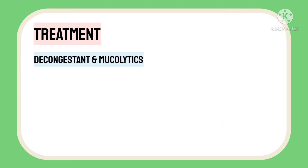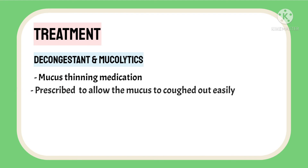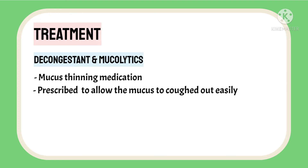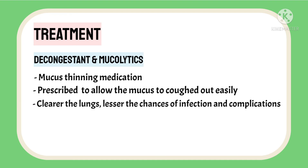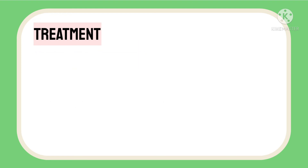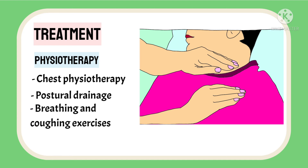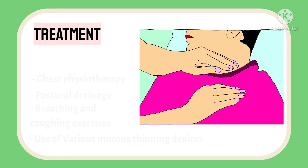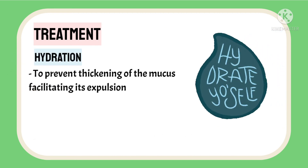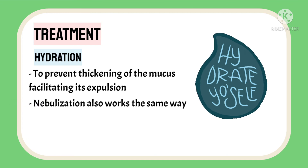A decongestant and a mucolytic — a mucus-thinning medication — are usually prescribed to allow mucus to be coughed out of the lungs easily and to clear the airways. The clearer the lungs are, the lesser the chances of infection. A physiotherapist may provide chest physiotherapy, postural drainage, and other methods to clear the lungs. Breathing and coughing exercises are taught to help the patient breathe effectively. Physiotherapists may also teach the use of various mucus-thinning devices. The patient is kept well hydrated to prevent thickening of mucus, and nebulisation therapy also helps in the same way.